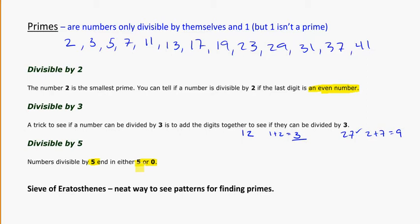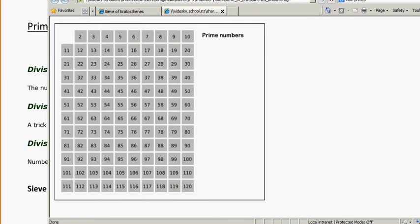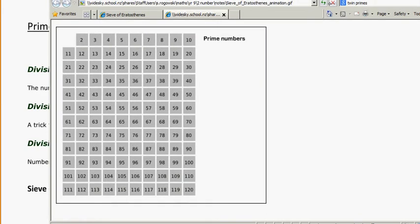And so one way that people often use to show prime numbers is a pattern called the sieve of Eratosthenes. And it's kind of a neat way to see what's happening. So we'll take a look and see if I can get this playing. So this is from Wikipedia, this animation, and we'll just watch it go through. So as we start, you'll notice one's not included because it's not considered part of the set of numbers we're looking through.